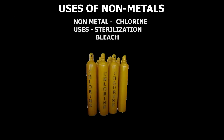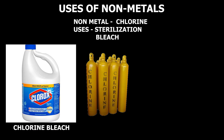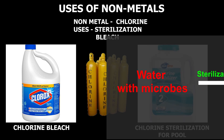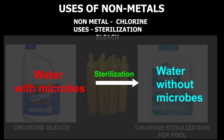Chlorine is helpful in killing dangerous microbes and thus it is used as a bleaching agent and in sterilizing water. Sterilizing is the process in which harmful microbes are removed from something.